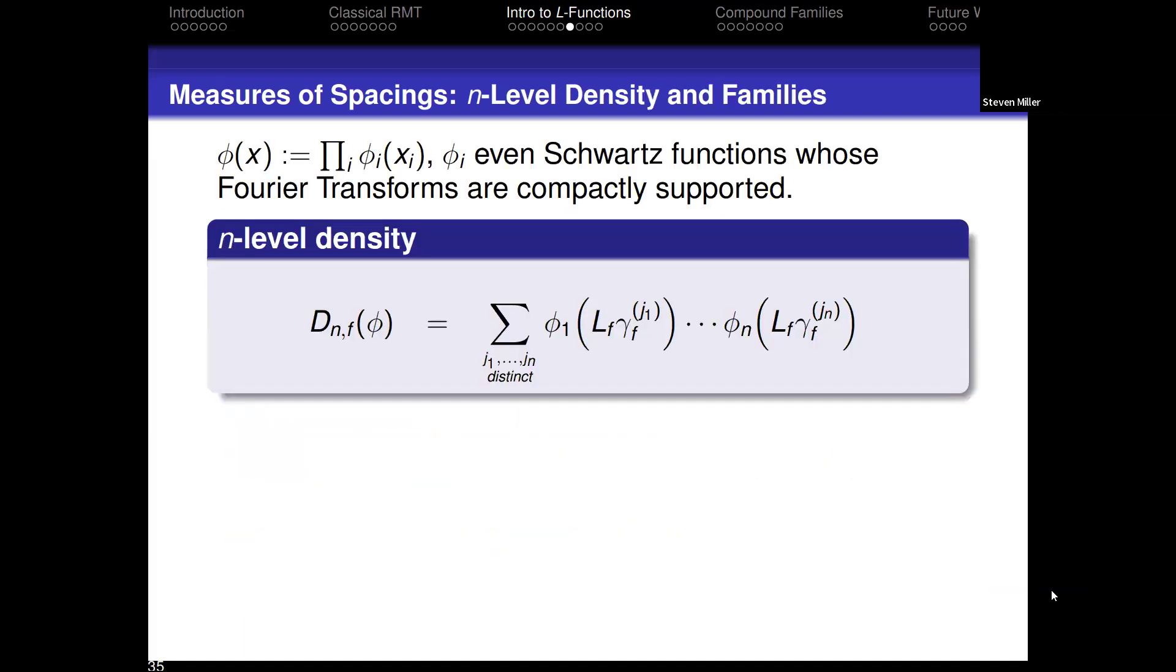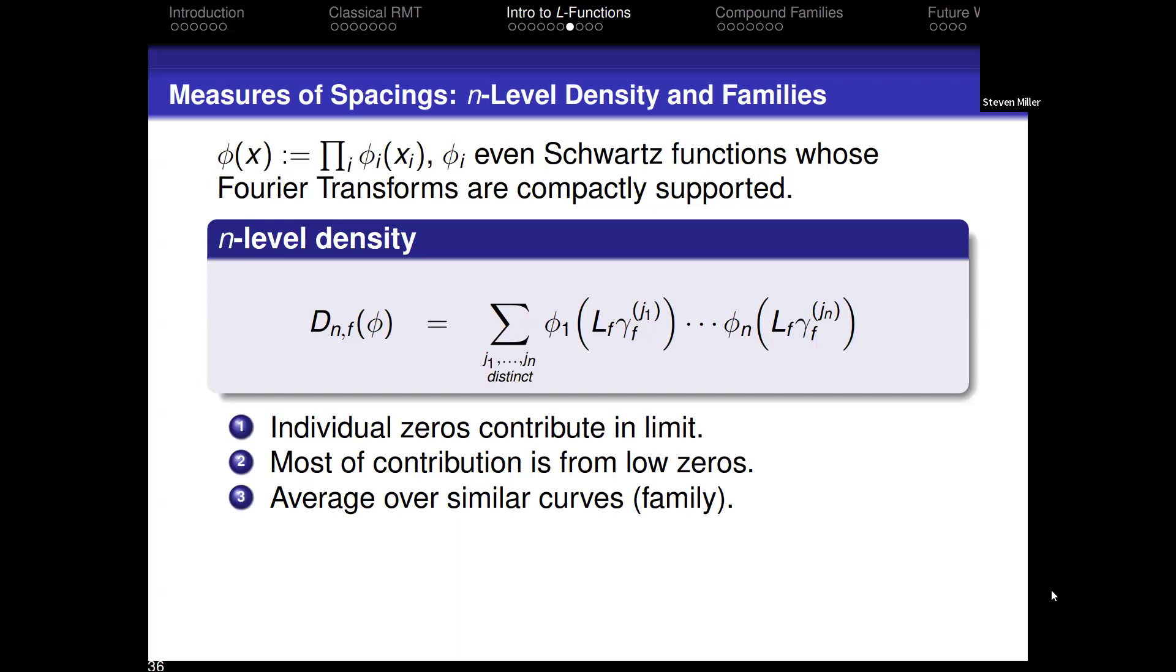The statistic we look at is what's called the n-level density due to Katz and Sarnak. What we do is we take some test functions φ_1 through φ_n. They're Schwartz so they decay rapidly. Anything you want to do can be justified. You scale the zeros near the central point so that they have mean spacing 1. Now almost all the action happens near the central point. But one L-function no longer gives you enough to analyze. If you take one L-function and you go very high up on the critical line, the number of zeros goes off to infinity. So you have plenty to average over. Near the central point, you only have a few zeros. So you actually have to look at a family of L-functions. You have to look at a bunch of L-functions that you believe have similar properties—maybe Dirichlet characters with the same conductor, maybe elliptic curves coming from a one-parameter family or something like that. Then we average over all the things in the family.